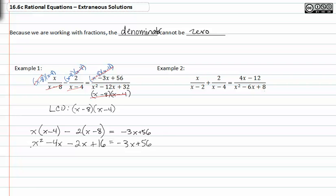Since this will be quadratic in form, I will set my equation equal to zero by adding three x to both sides, and subtracting fifty-six from both sides.